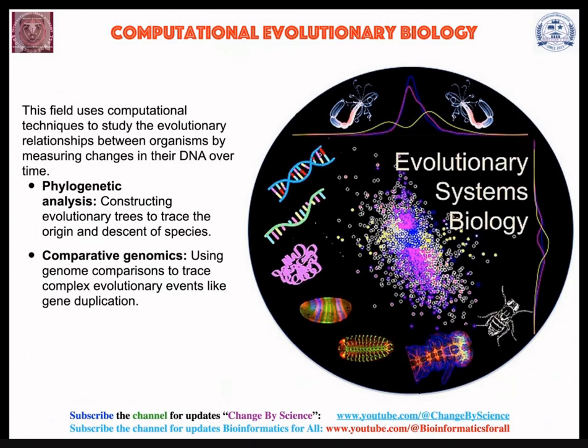Comparative genomics uses genome comparisons to trace complex evolutionary events like gene duplication. A third subtopic of computational evolutionary biology involves predicting driver and passenger genes in cancer or other diseases using a similar approach. For example, when working on cancer, you construct phylogenetic trees to find genes that are mutated because of cancer — these are called driver genes, or driver mutations, in different types of cancer.